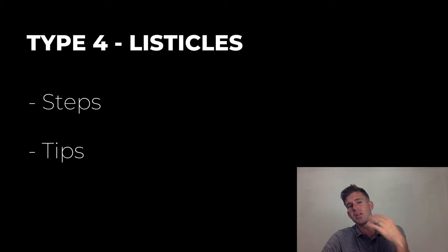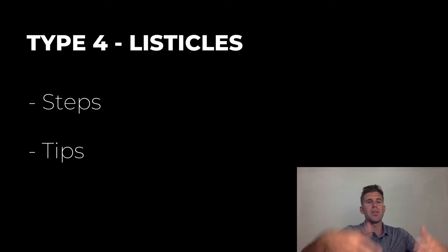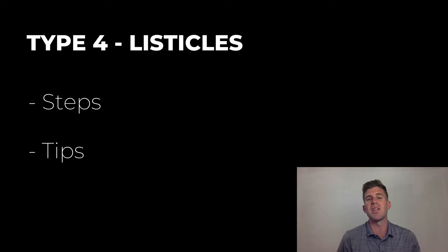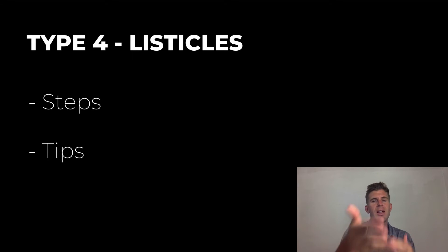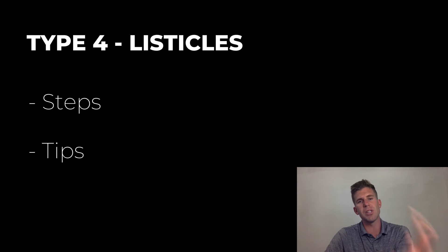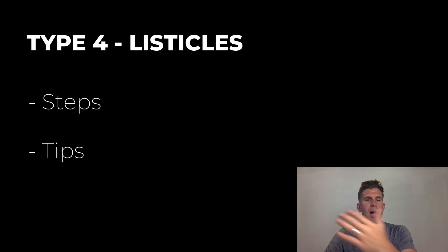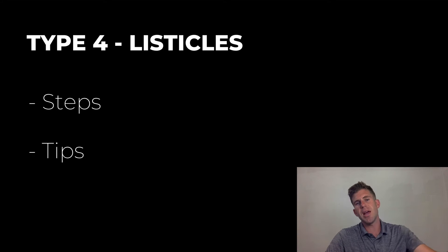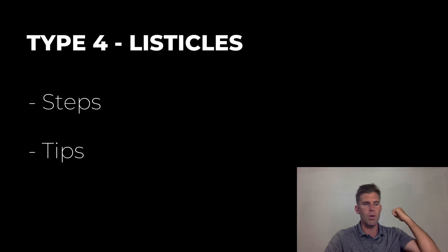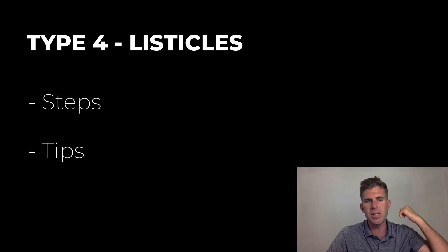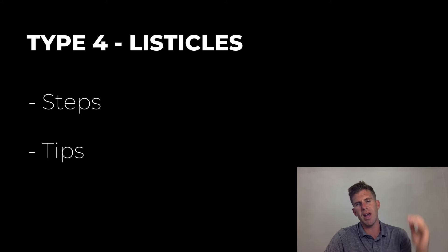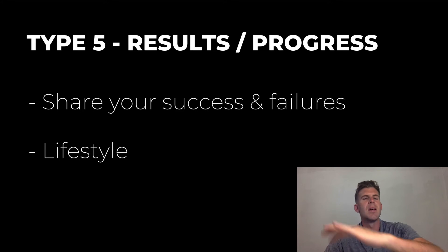Type number four is listicles. This video that I'm shooting right now, going over seven different types of YouTube content, is an example of a listicle. You can do five steps to do this, or here are 10 tips on how to be successful on YouTube.